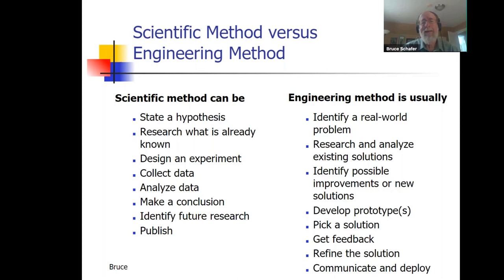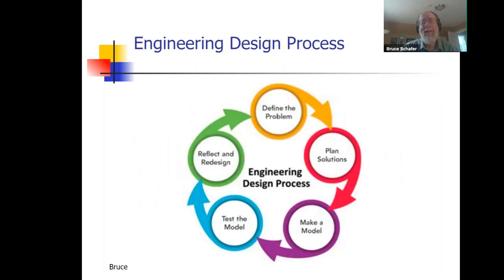Classroom instruction is usually guided to a particular solution, usually something that's already been discovered by scientists and engineers. In contrast, the innovation project has kids choose where they want to go by choosing the problem, and there are many possible solutions. They get to decide what solution they want to create or improve. This circular process will be referred to several times tonight.